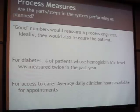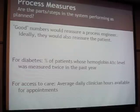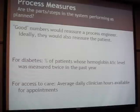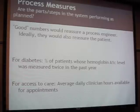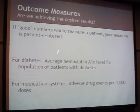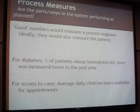Process measures on the other hand are things along the way - things that would make a process manager giddy. For the diabetes instance, the outcome measure is average hemoglobin A1c. The process measure might be the percentage of patients for whom you're actually doing that measurement when you're supposed to. You can't trust the average hemoglobin A1c if you don't know you're actually measuring it twice per year. The process measure lets you look at your process and make sure you're sticking to it.